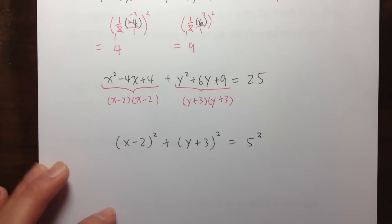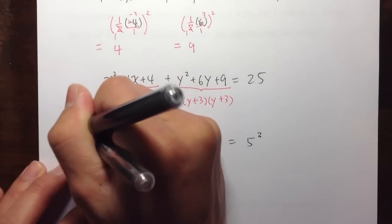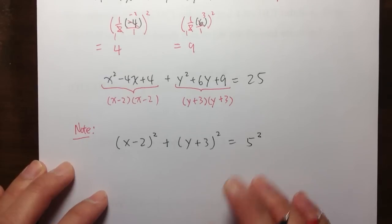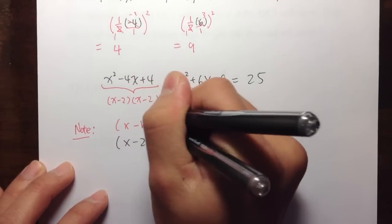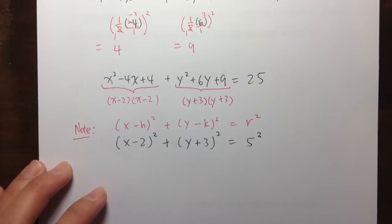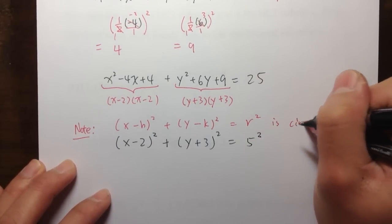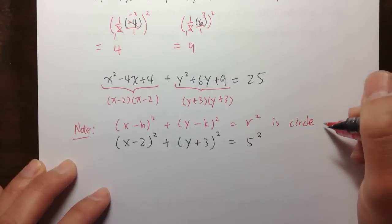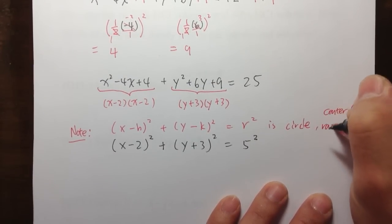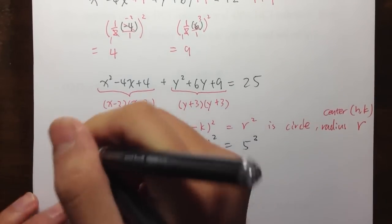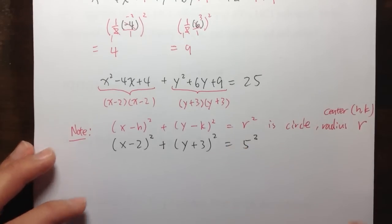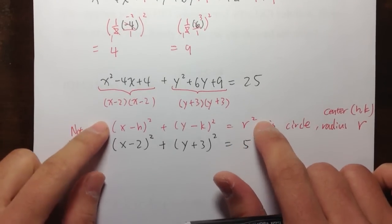Why write 25 as 5 squared? Because this form is exactly the equation of the circle. When we have x minus h squared plus y minus k squared equal to r squared, this is a circle. The center is at (h, k) and the radius is r.